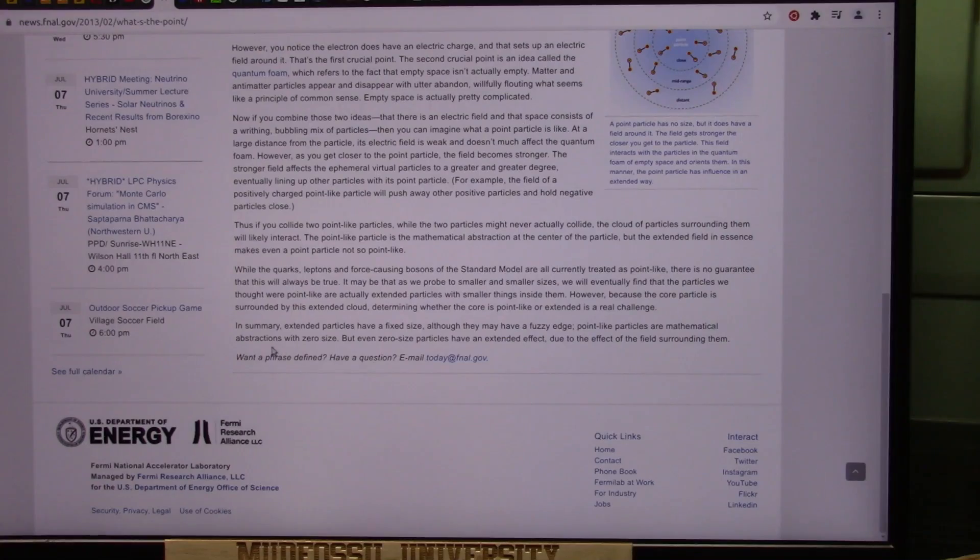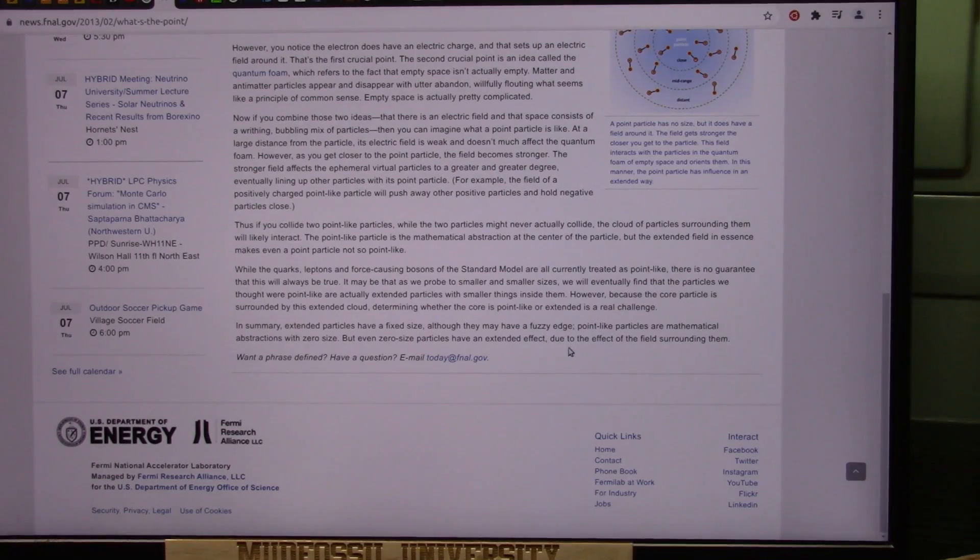The point-like particles are abstractions with zero size. And that's possible because they don't knock over houses on atomic bombs, and I can show you that. But even zero-sized particles have an extended effect because of their fields.